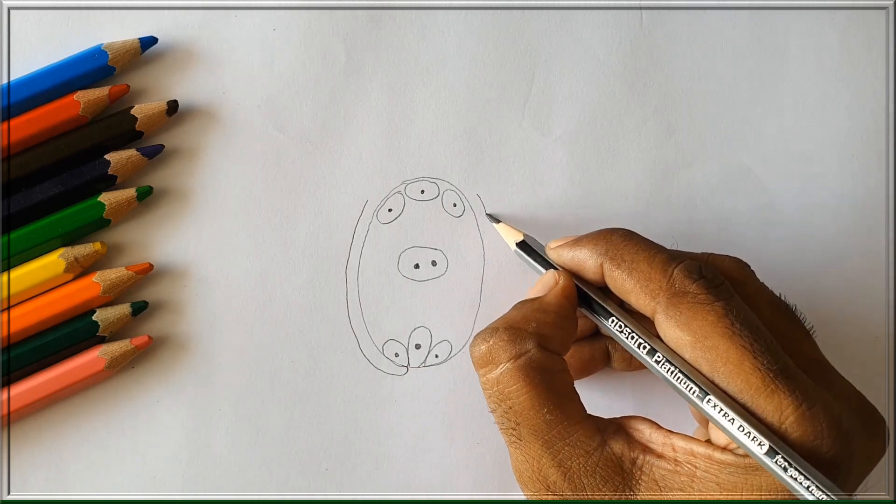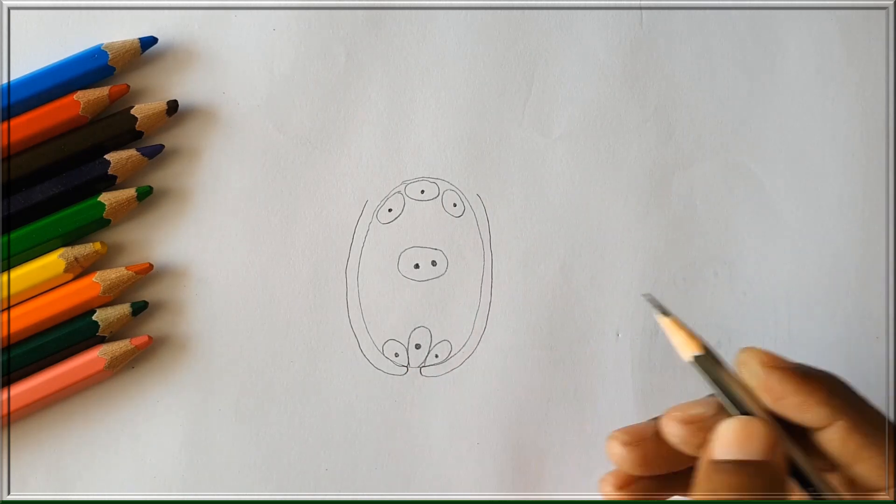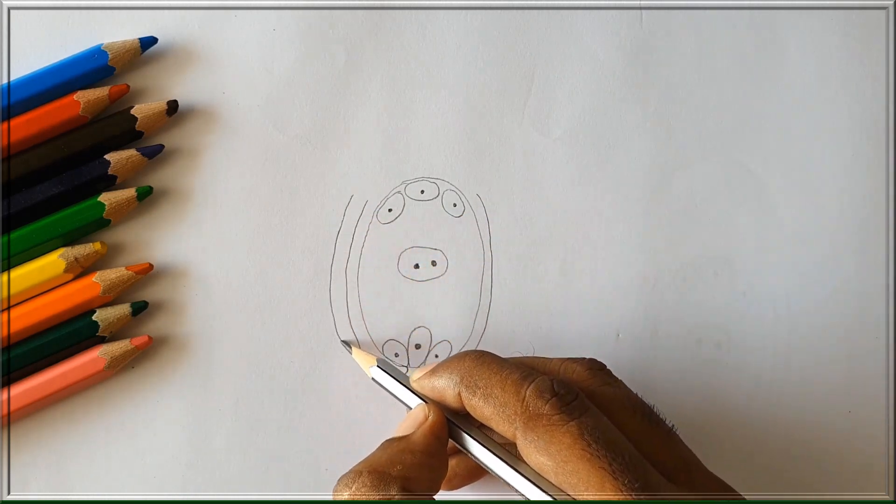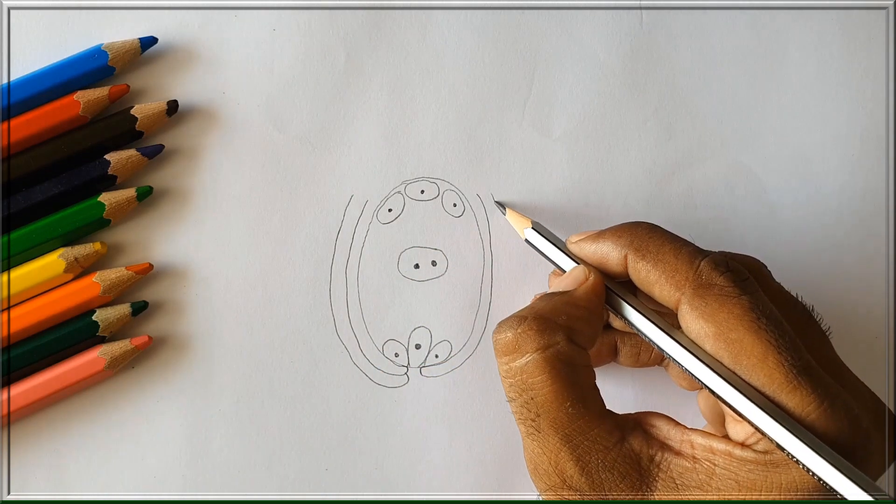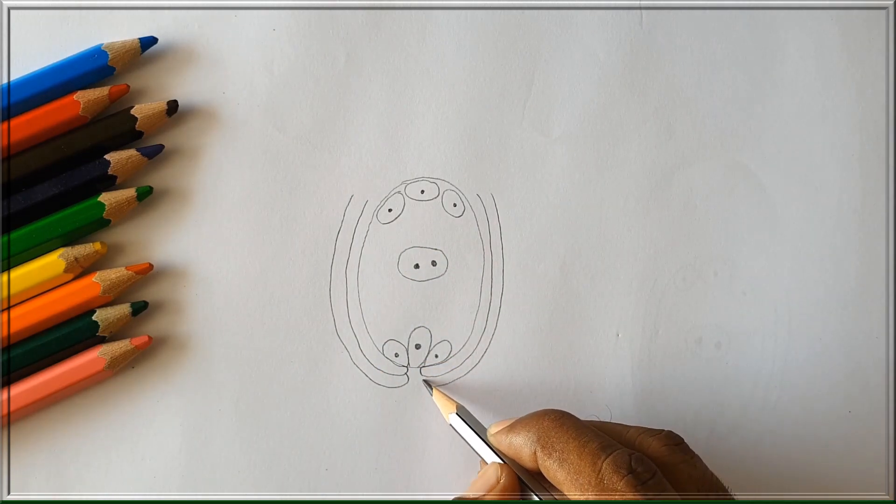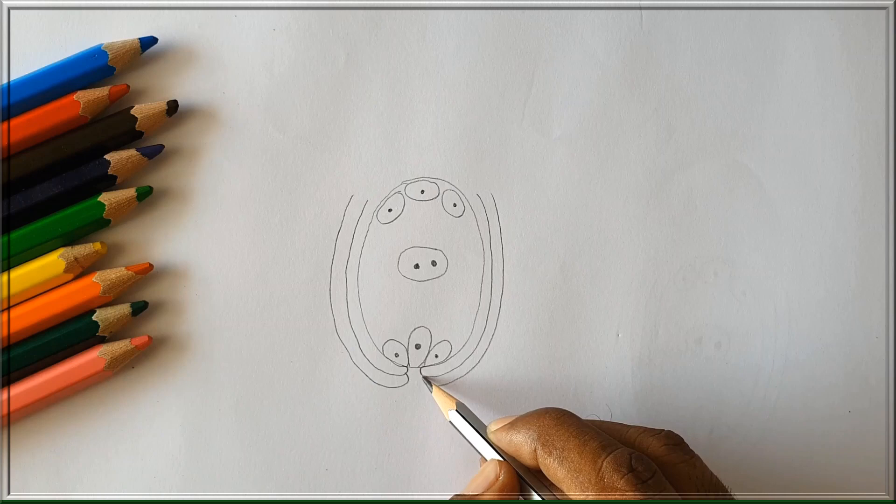The embryo sac is surrounded by 2 layers: the inner integument and outer integument. These 2 integuments leave a small pore at the point where the egg is located. This is called the micropyle.